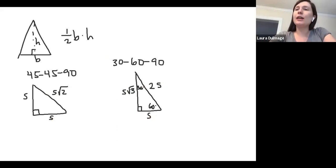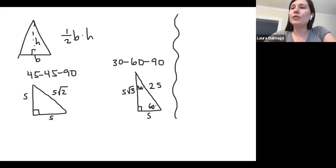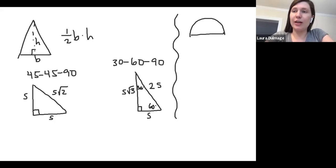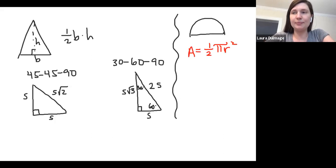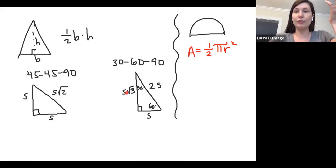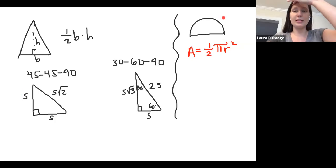We're also going to be dealing with semicircles today. If we have a semicircle — which is a half circle — and we want to find the area, we just take half the area of a circle. The area of a circle is πr², so the area of a semicircle is one-half πr². Those are the two types of things we're mainly going to be seeing today.